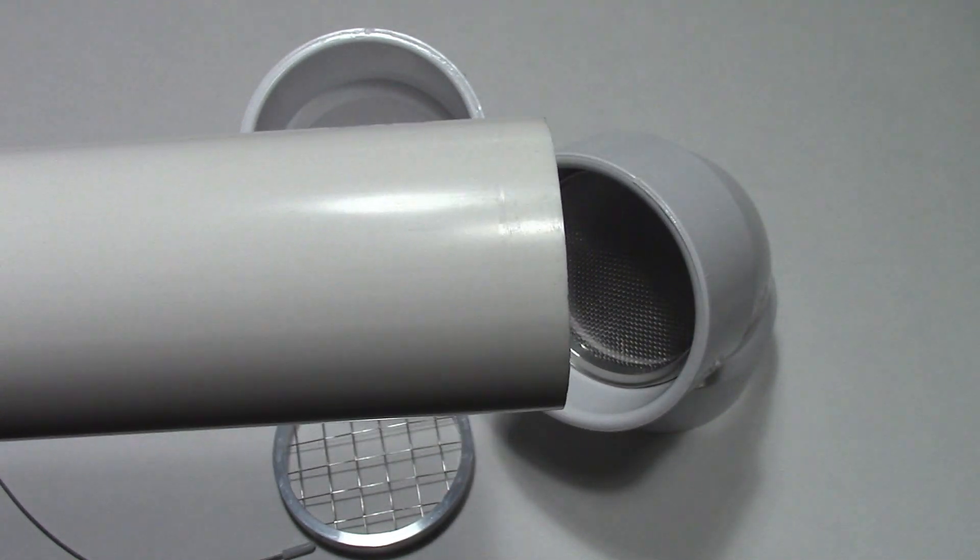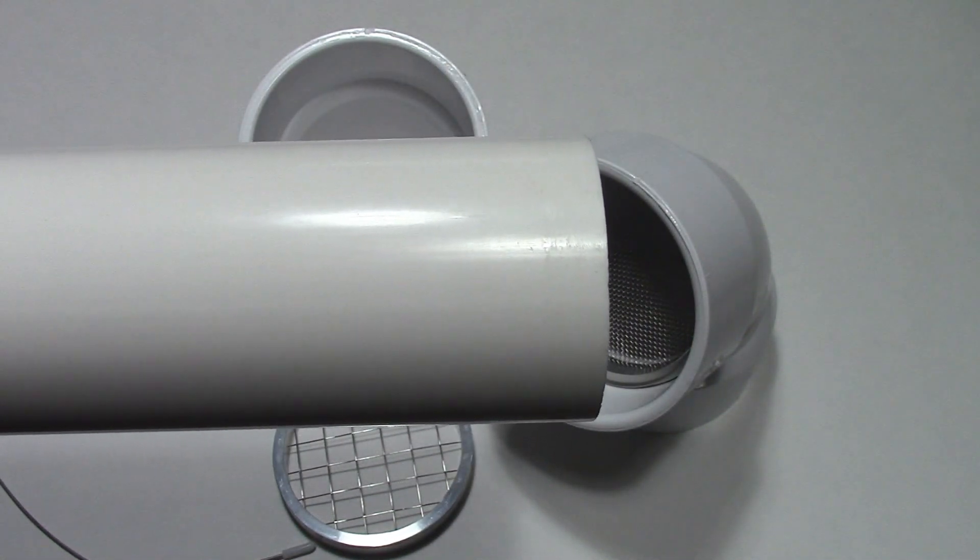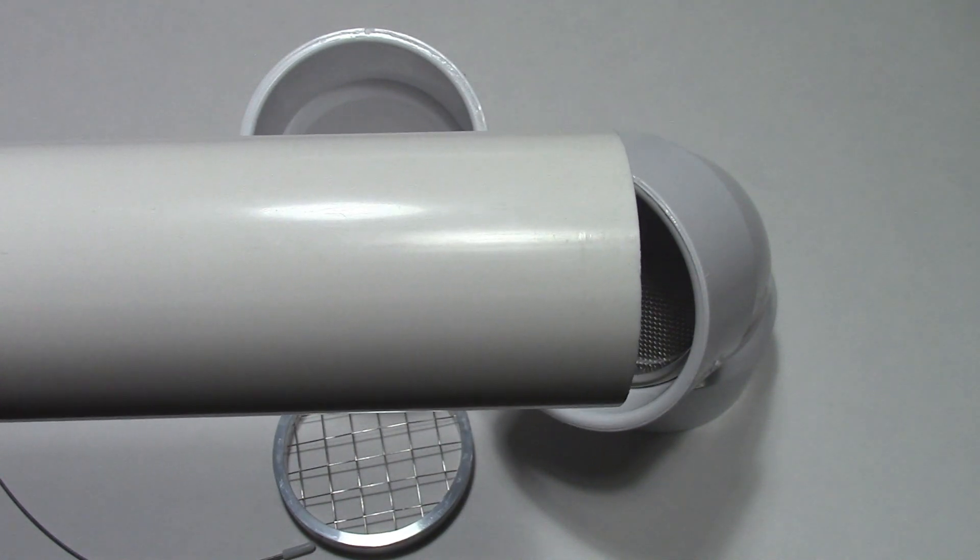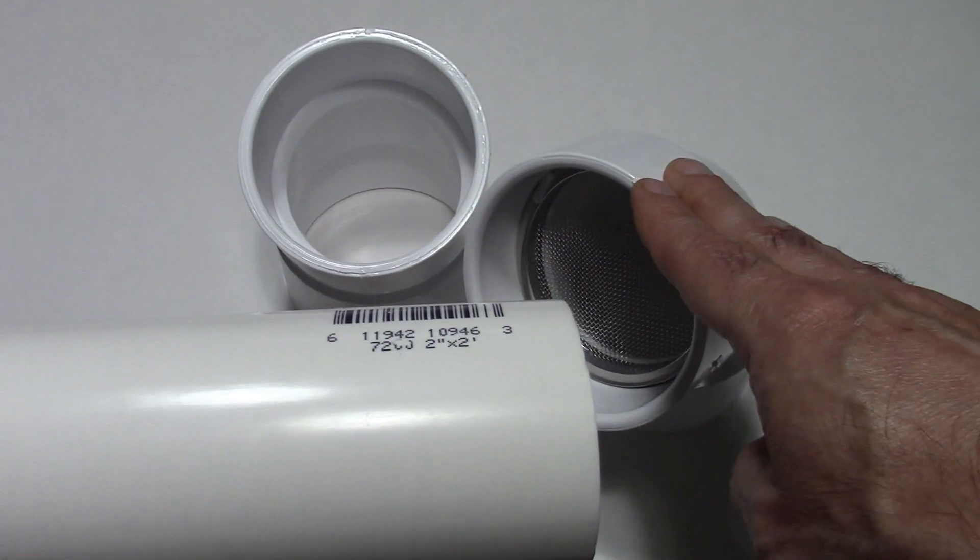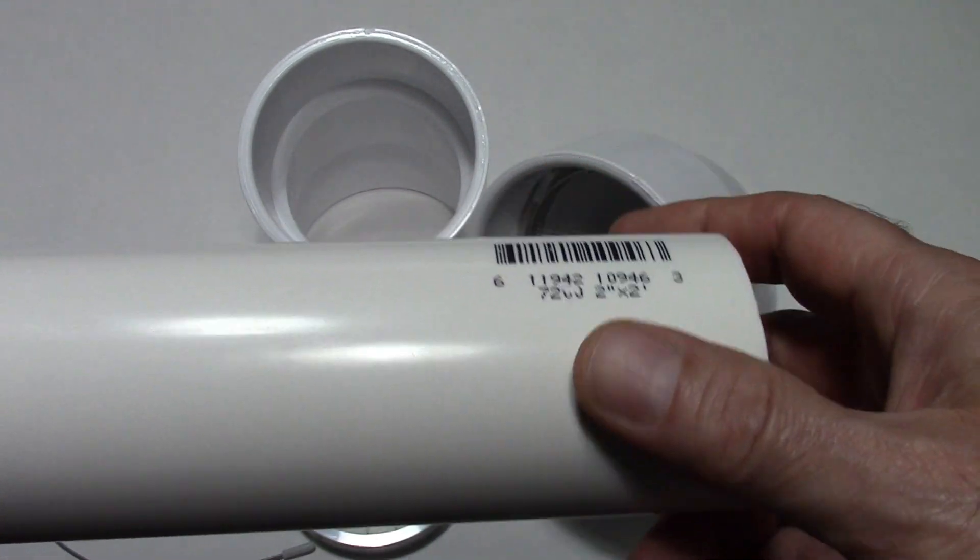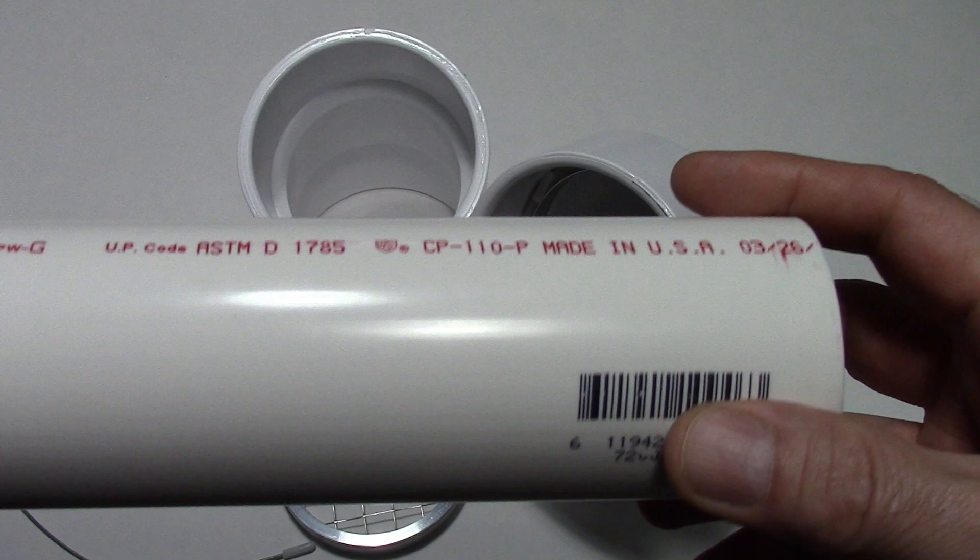If you do have straight pipes sticking out of your home, you can go to a local hardware store and purchase a hub. These are just standard schedule 40 PVC hubs and most of your big box hardware stores have plenty of them.